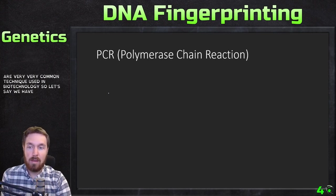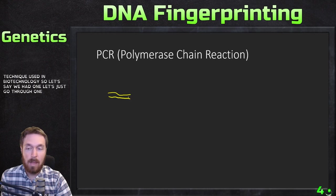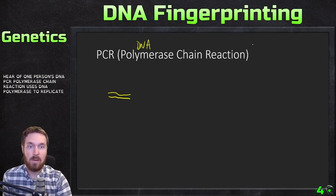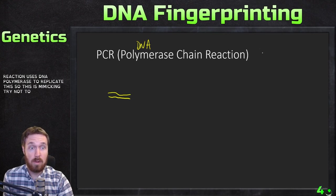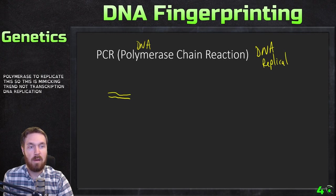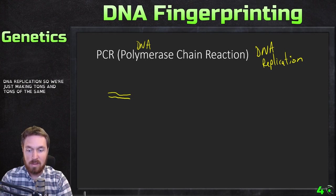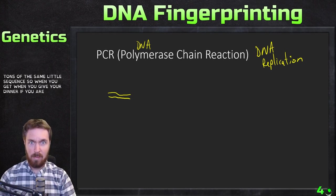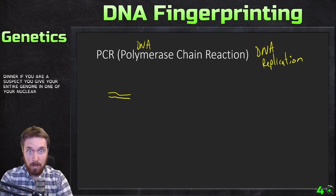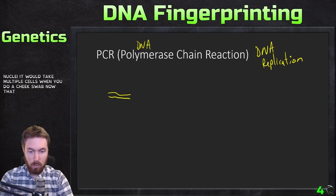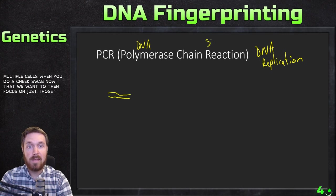PCR — polymerase chain reaction — uses DNA polymerase to replicate DNA. It mimics DNA replication, making tons of copies of a small sequence. When a suspect gives their DNA via a cheek swab, you get their entire genome from multiple cells. We then want to focus on just those STRs — just those short tandem repeats.